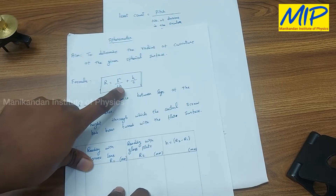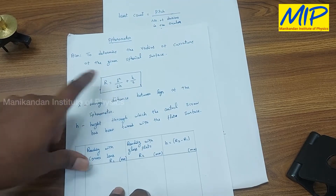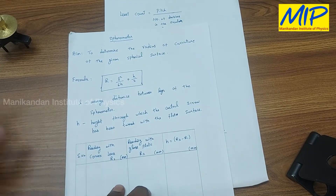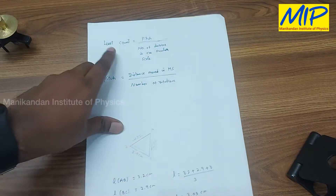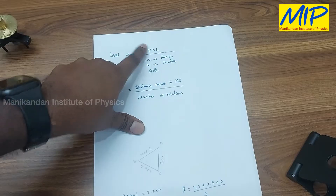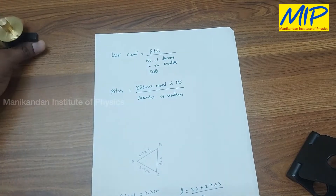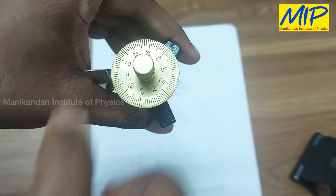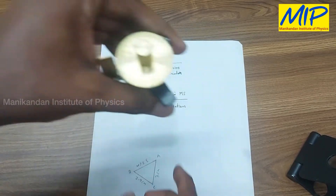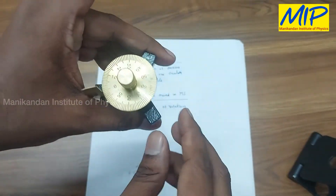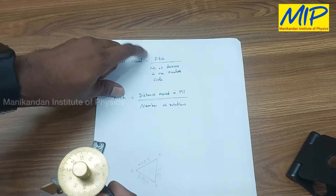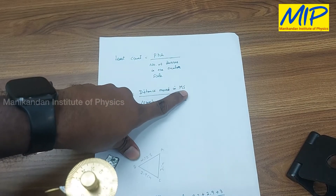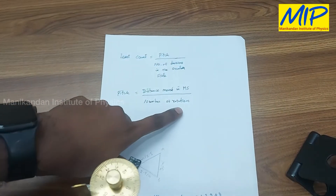Next I will explain how to find H. Before that, I will explain how to find the least count of the spherometer. Least count is the pitch scale reading divided by the number of divisions in the circular scale. The circular scale has 100 divisions. The pitch value equals the distance moved on the main scale when rotating, divided by the number of rotations.